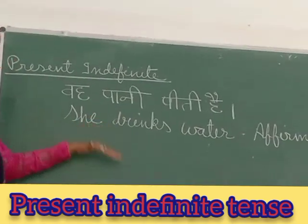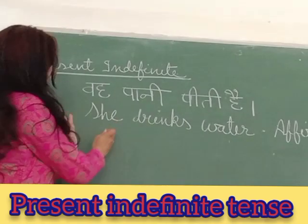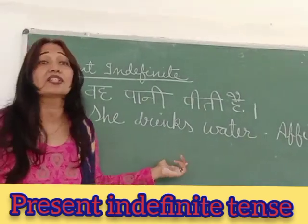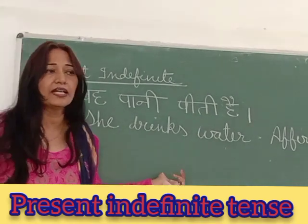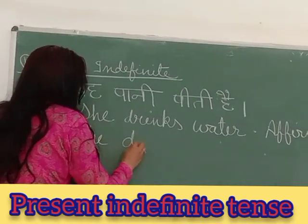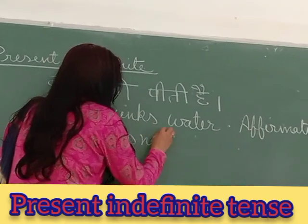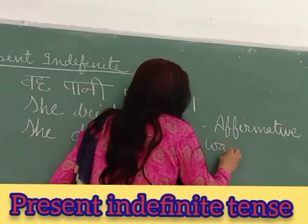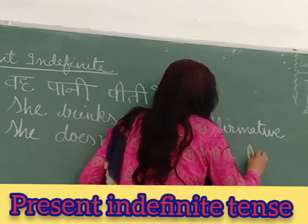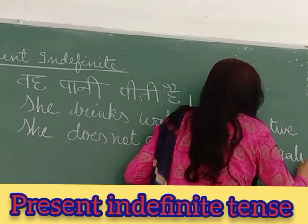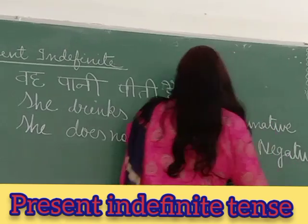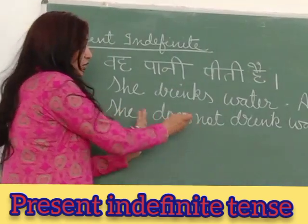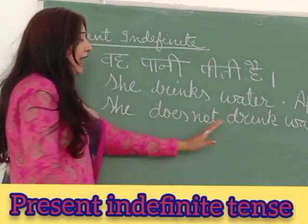Now we will make the negative. When the subject is singular, we use 'does not.' So she does not drink water. This is your negative sentence. When the subject is singular, we use 'does not' in negative sentences.